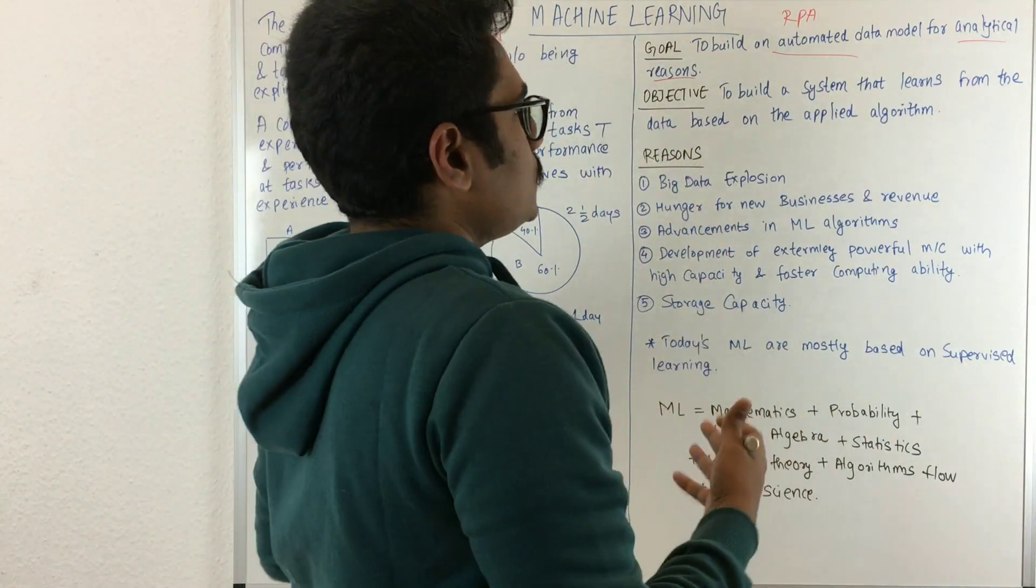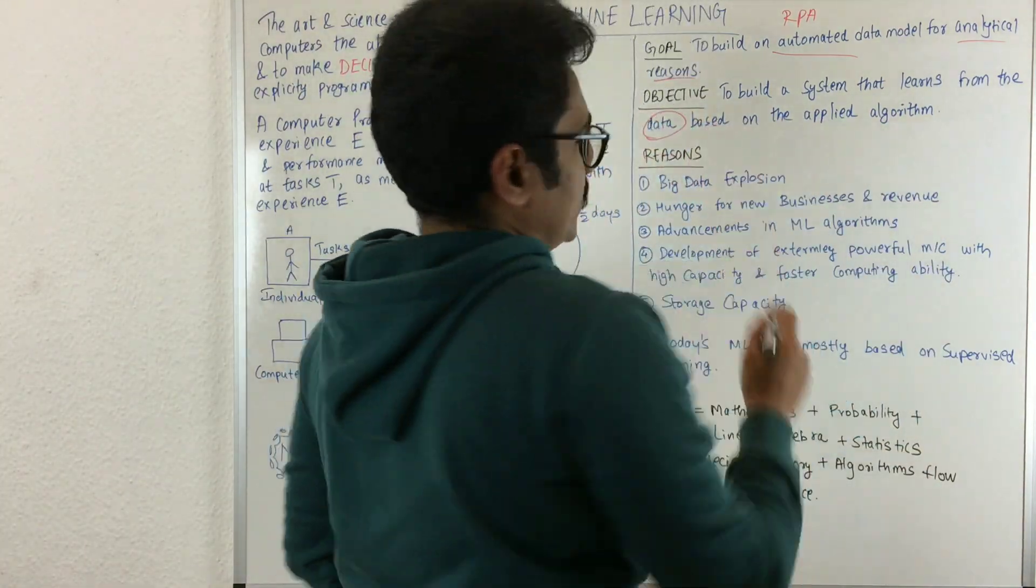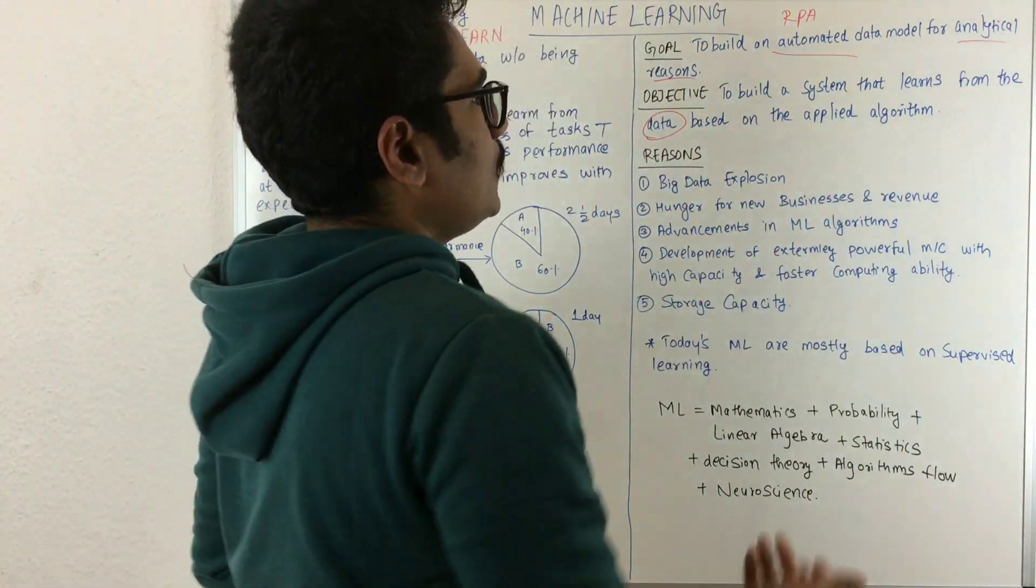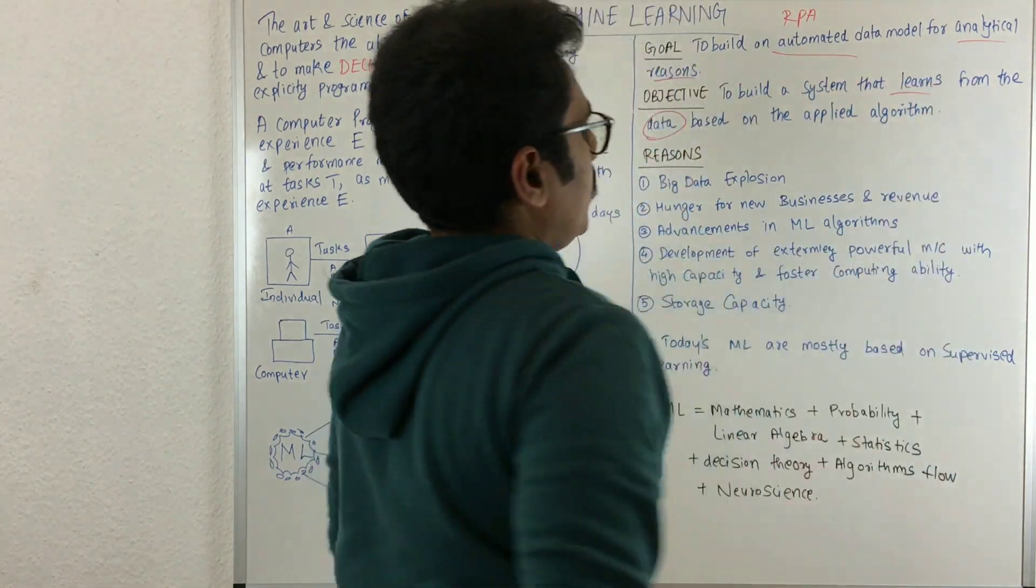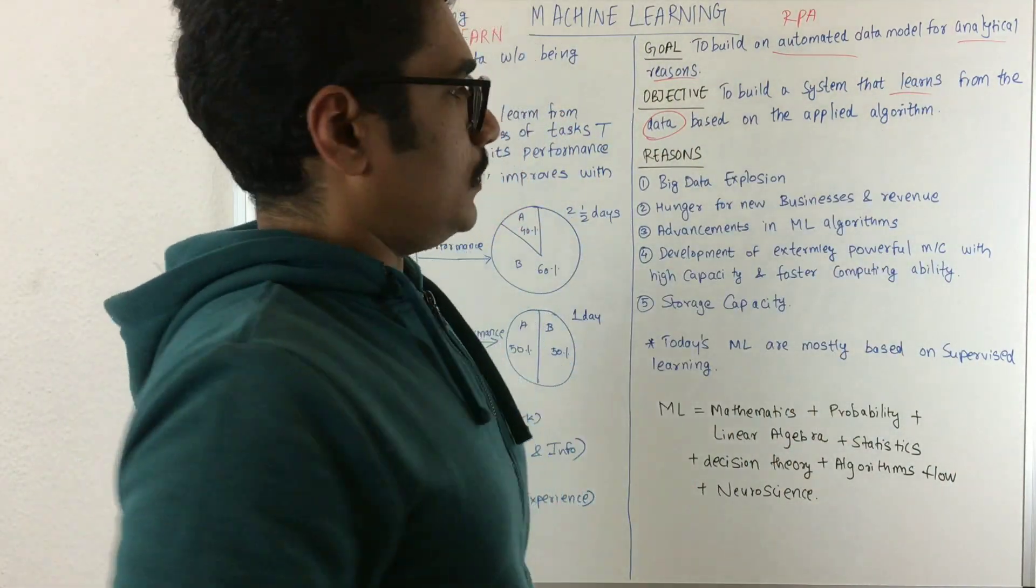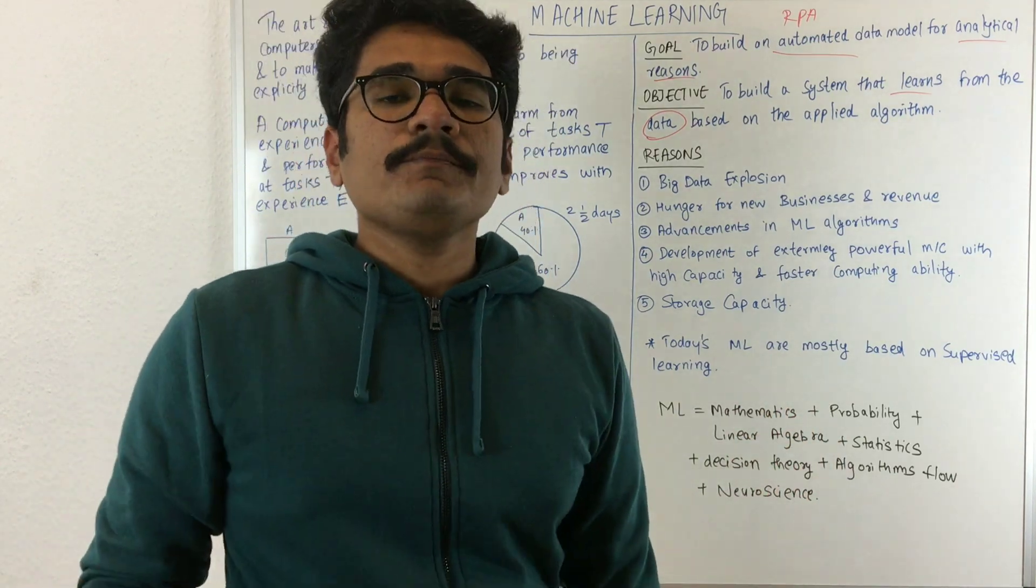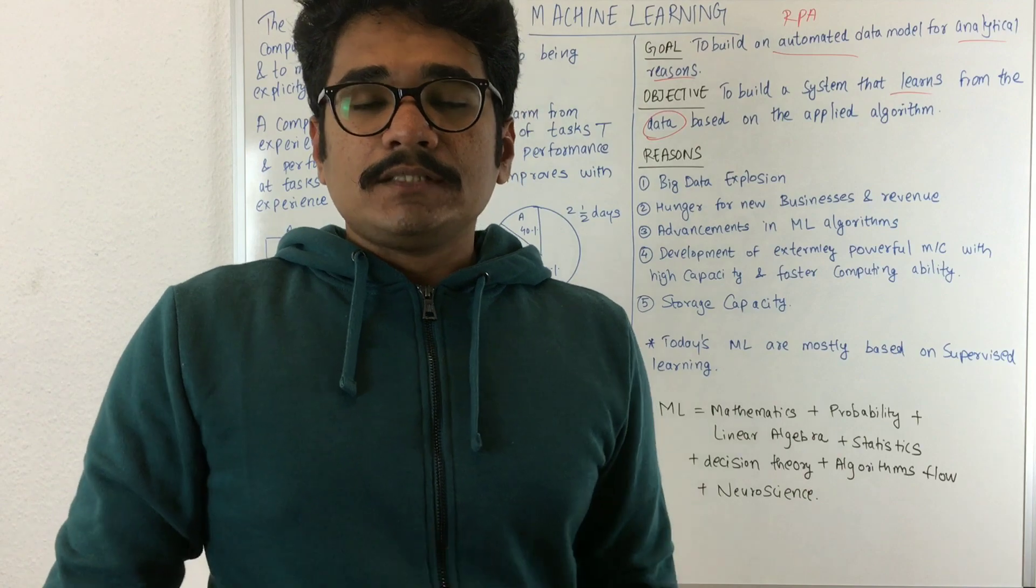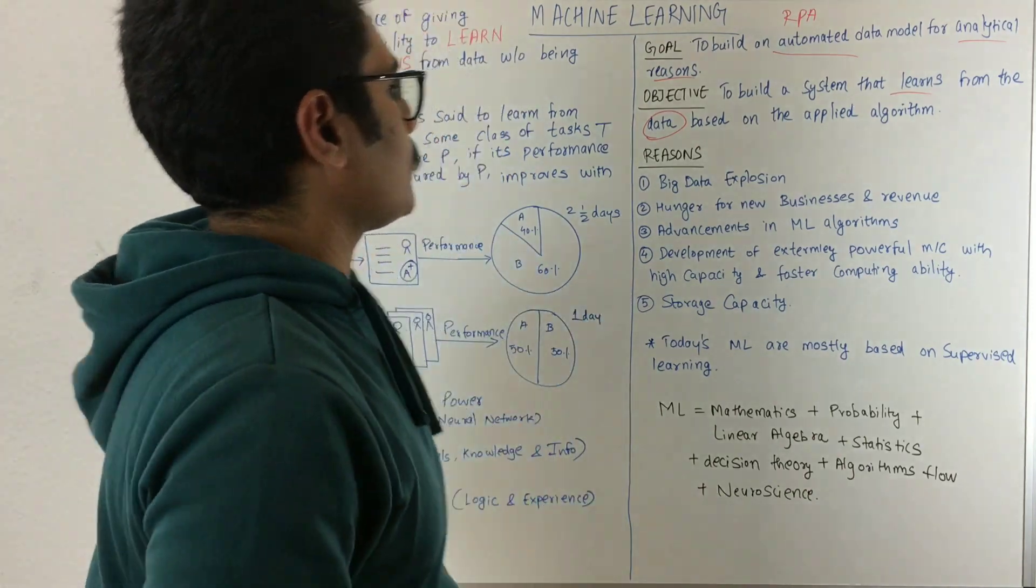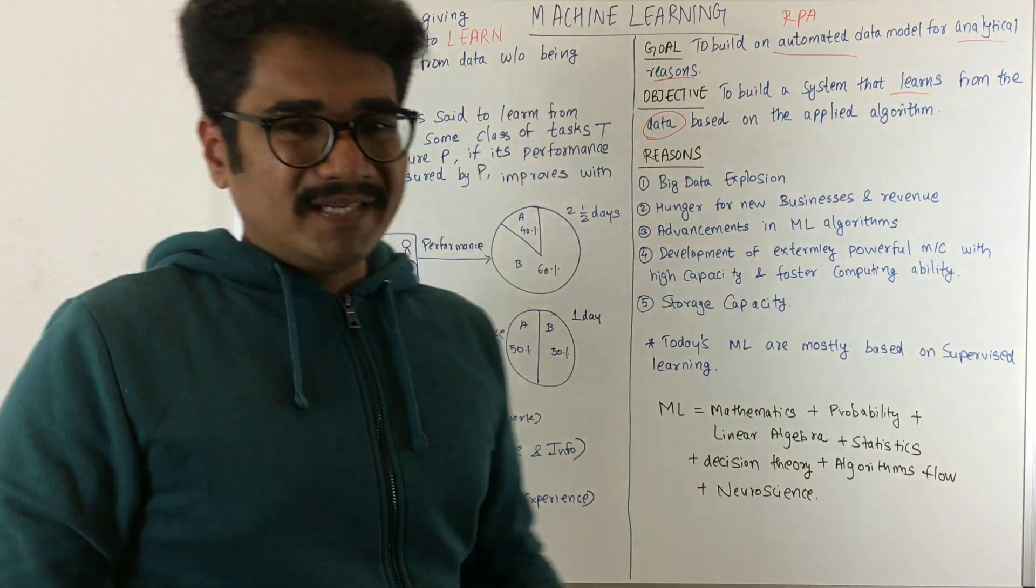It's mainly for analytical reasons—for calculation. If manually the error rate is 60-70%, that's very high. To eliminate that, we do automation. The main objective is to build a system that learns from the data based on the applied algorithm. You have diverse and good data that learns, then you apply certain machine learning algorithms.